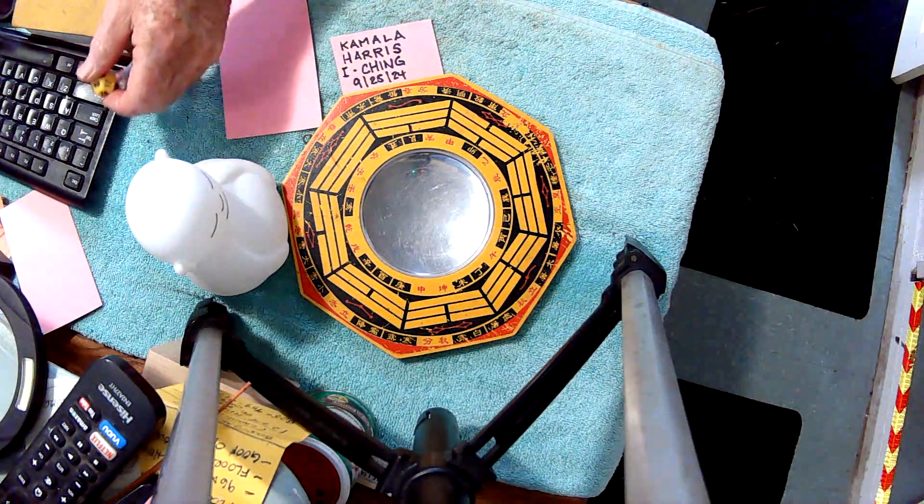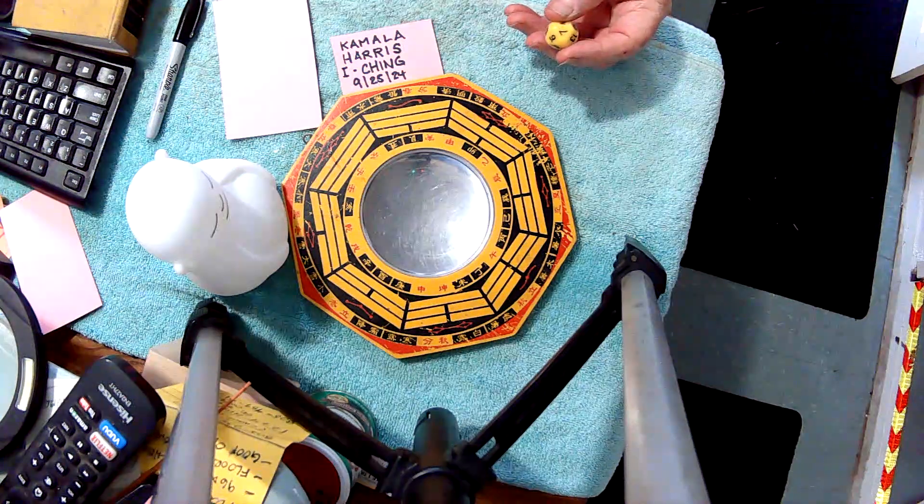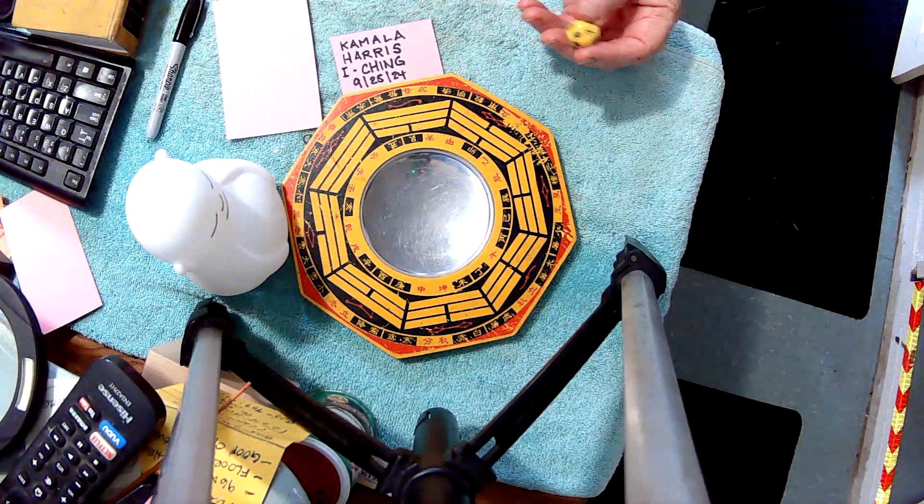So we have a die that has 16 sides, and we cast it to get our hexagram. And we build the hexagram from the bottom up.